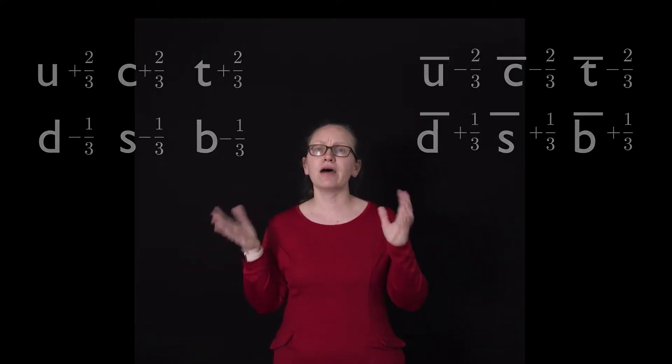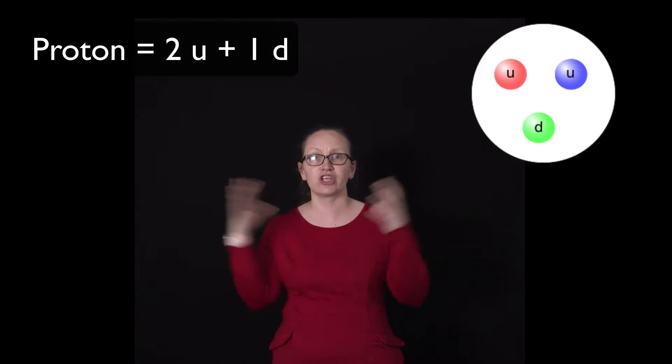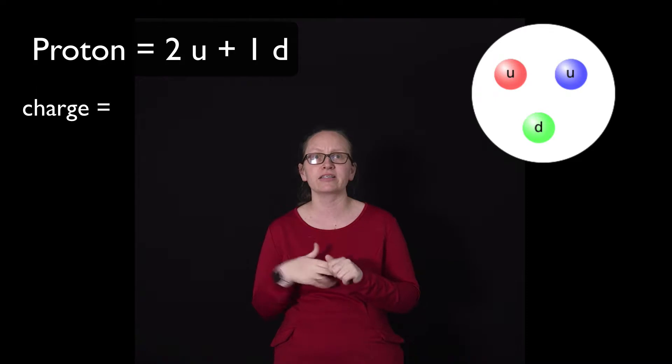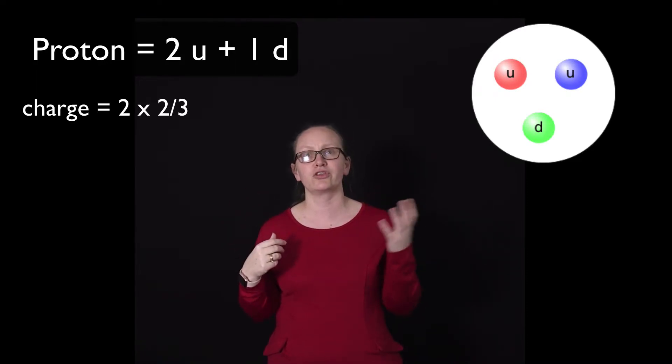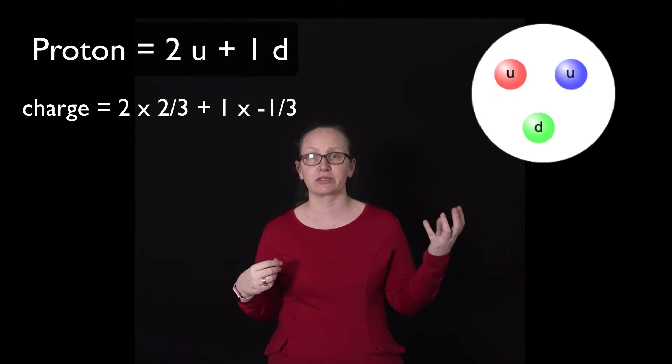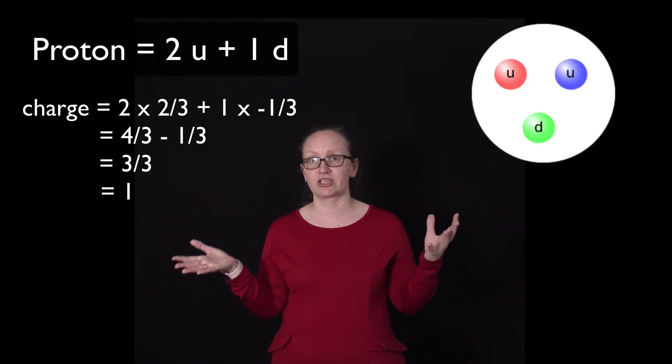Our proton is actually made from two up quarks and one down quark. Let's just check that the charge works out in this case. If we have two up quarks, we have two times two-thirds the charge on an electron, so four-thirds the charge on the electron, plus the down quark's charge of minus one-third. Four-thirds minus one-third gives us three-thirds, which is just one times the charge on an electron and a positive charge.